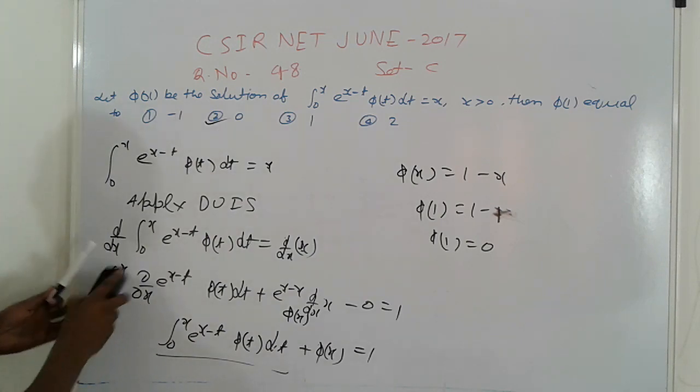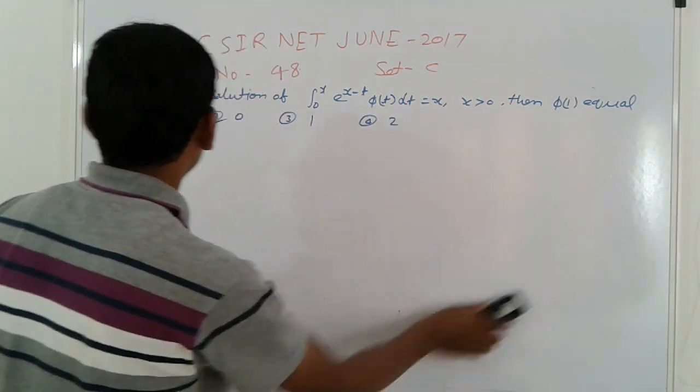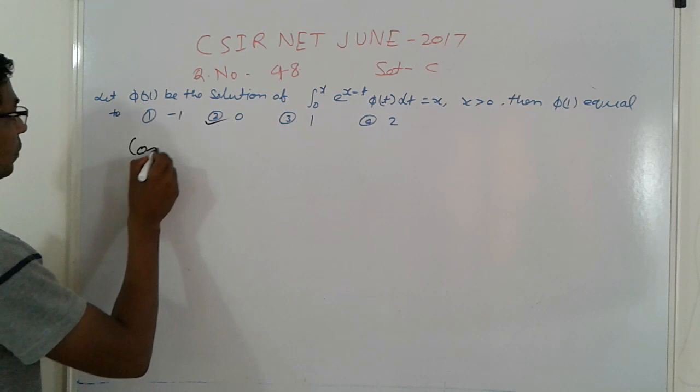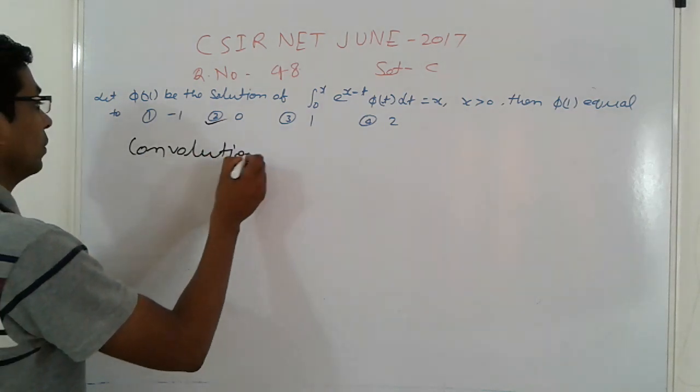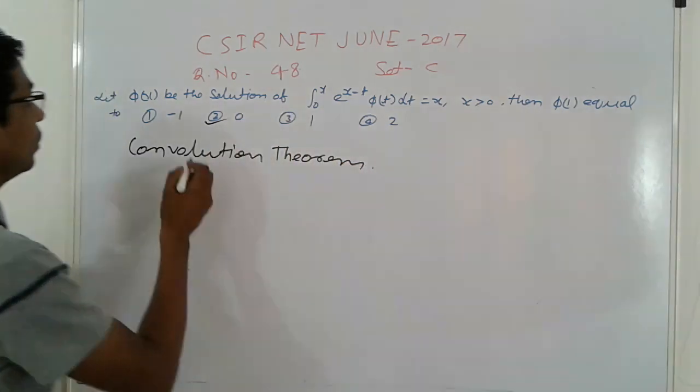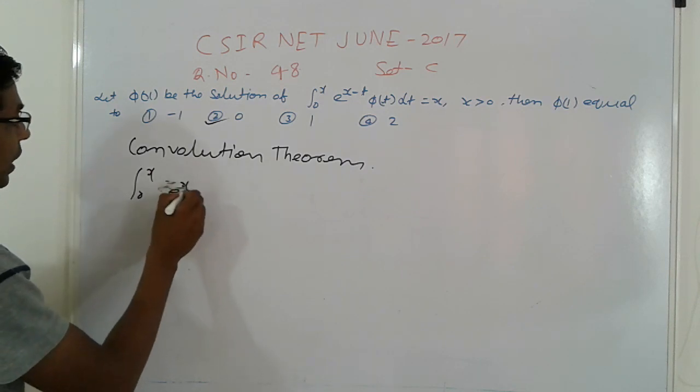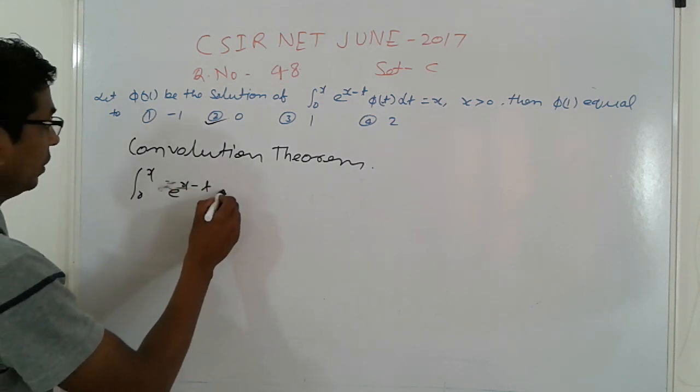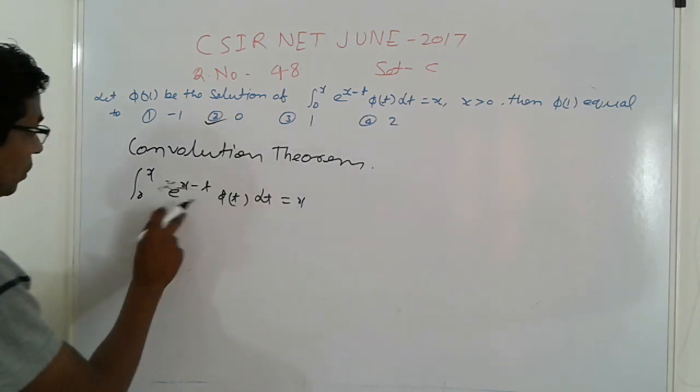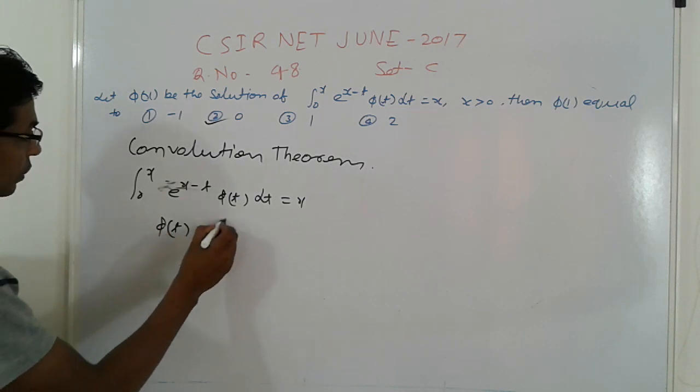Using the convolution theorem: ∫₀ˣ e^(x-t) φ(t) dt = x. This is φ(t) and e^t in convolution form. Apply Laplace transformation.